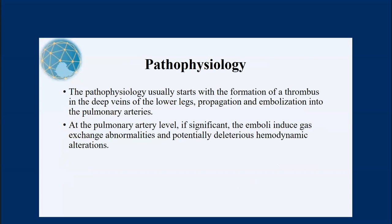When we come to pathophysiology, it usually starts with the formation of thrombus in the deep veins of the lower leg. The upper limbs can also be affected, but the lower legs are most common. Once there is thrombus formation, there will be propagation and embolization into the pulmonary arteries. At the pulmonary artery level, depending on the size of the thrombus, it can cause gas exchange abnormalities or hemodynamic alteration. Pulmonary embolism has two main pathophysiological mechanisms: gas exchange abnormalities and hemodynamic alteration.